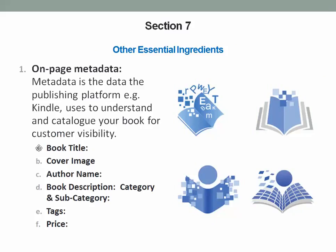Then we get into the marketing essentials — the elements that have to be apparent on your Kindle sales page. You need to get all these different elements right so that you become visible and noticeable to your potential customers. These are in particular: the book title, the cover image, the author's name or pen name, book description, category and subcategories, tags, and price — finding the perfect pricing point to get your sales going.